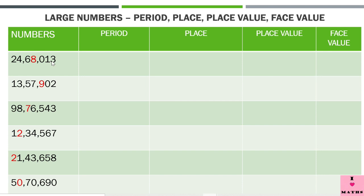As I have told in my earlier videos, the first period is the ones period, next is the thousands period, and then the lakhs period. These periods are demarcated with the help of commas. The commas show that the next period is starting — ones period, comma, then thousands period, comma, and then lakhs period.